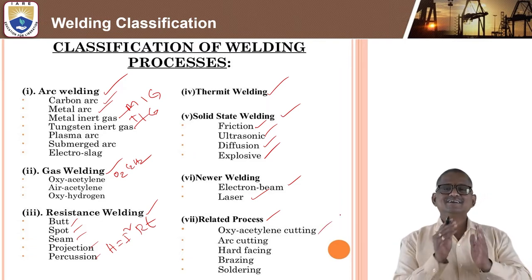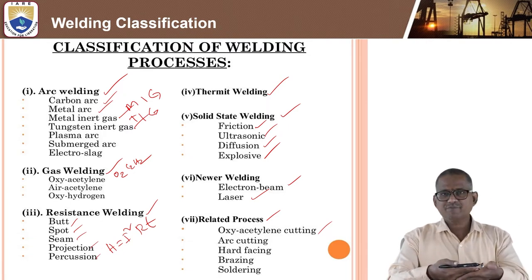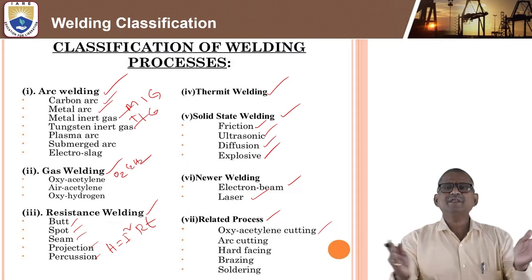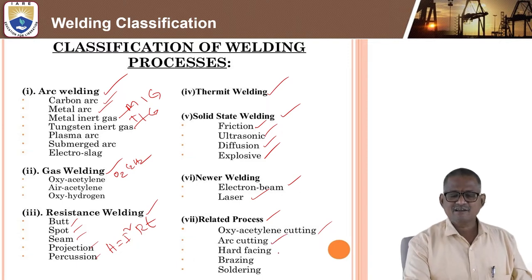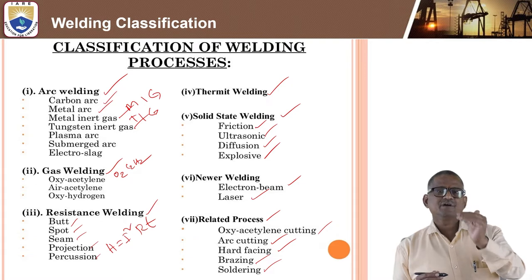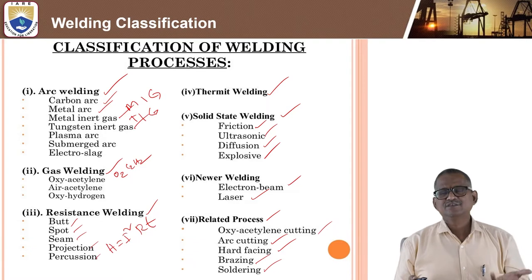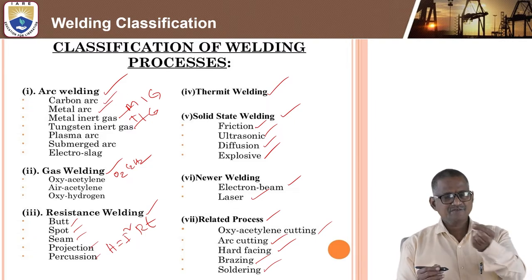Some other related processes are also part of fabrication — not exactly the same as welding techniques. Oxy-gas cutting involves removing material by focusing the flame to separate parts. Arc cutting and hard facing are also related. Brazing and soldering differ by temperature: above 427°C is brazing, below 427°C is soldering. Soldering iron is widely used in the electronics industry for joining electrical wires.